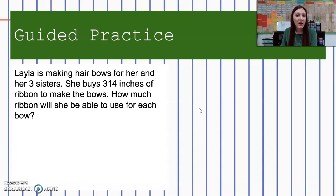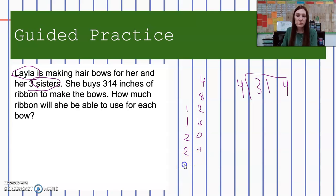Last question. Layla is making hair bows for her and her three sisters. She buys 314 inches of ribbon to make bows. How much ribbon will she be able to use for each bow? I'm going to take 314 and divide by Layla and three sisters. That's going to be four bows Layla is going to be making. So we're going to do our multiples of four: 4, 8, 12, 16, 20, 24, 28, 32, 36. Four can divide into three zero times. Four times zero is zero. Three minus zero is three. Bring down the one because three is smaller than four.